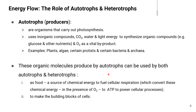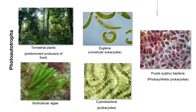The organic molecules produced by autotrophs can be used by both autotrophs and heterotrophs as food — a source of chemical energy to fuel cellular respiration, which converts chemical energy in the presence of oxygen into ATP to power cellular processes and to make the building blocks of cells. These are examples of photo-autotrophs, which use light to make food: terrestrial plants, multicellular algae, Euglena (unicellular eukaryotes), cyanobacteria (prokaryotes), and purple sulfur bacteria (photosynthetic prokaryotes).